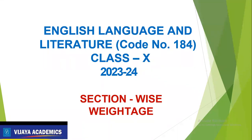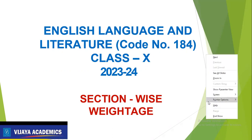Hi everyone, I'm Vishal from Vichai Academics. Today we are going to learn how the section-wise weightage is given for the coming session 2023-2024 for English Language and Literature. As all of you know, the code of English Language and Literature is 184. So let us see in detail now.